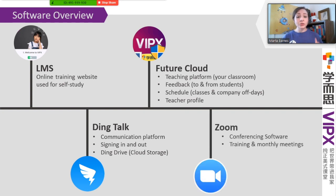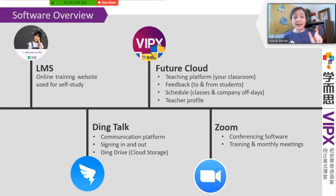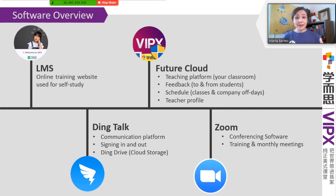Finally, we have Zoom. Zoom is a conferencing software that functions between a website and an app — you do need to have it installed to run it, but you can access it through LMS or through an HTML link that a trainer might give you. It's used only for our live training sessions and monthly meetings, simply there as a facilitator to allow us to interact with each other in a live fashion. That is the overview of the software we'll be using here at the company — we try to keep it nice and compact and simple.